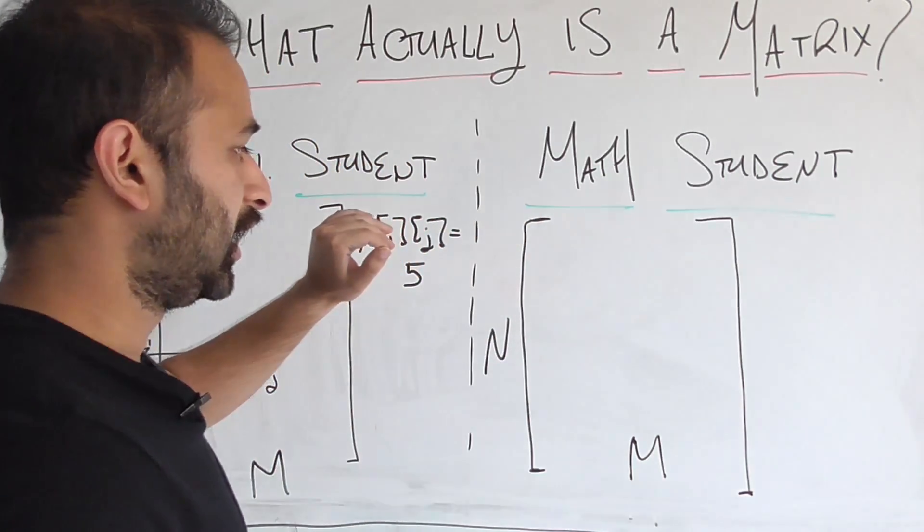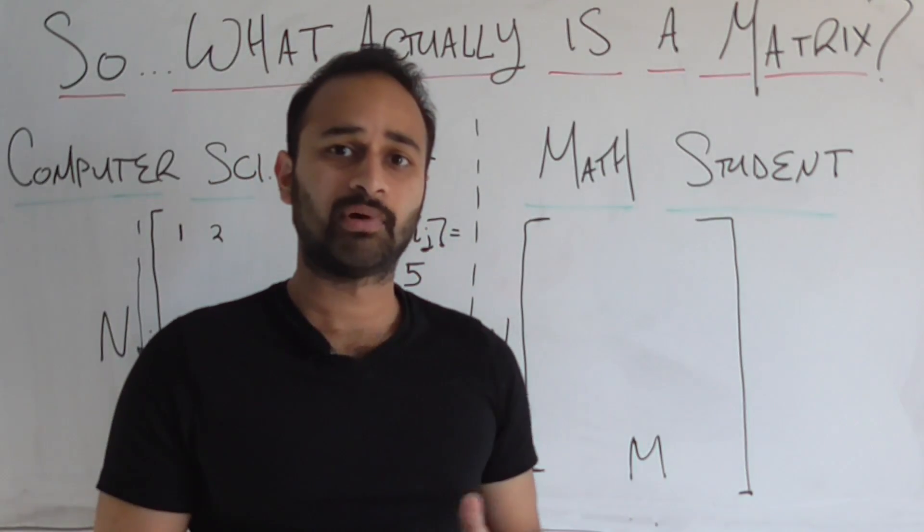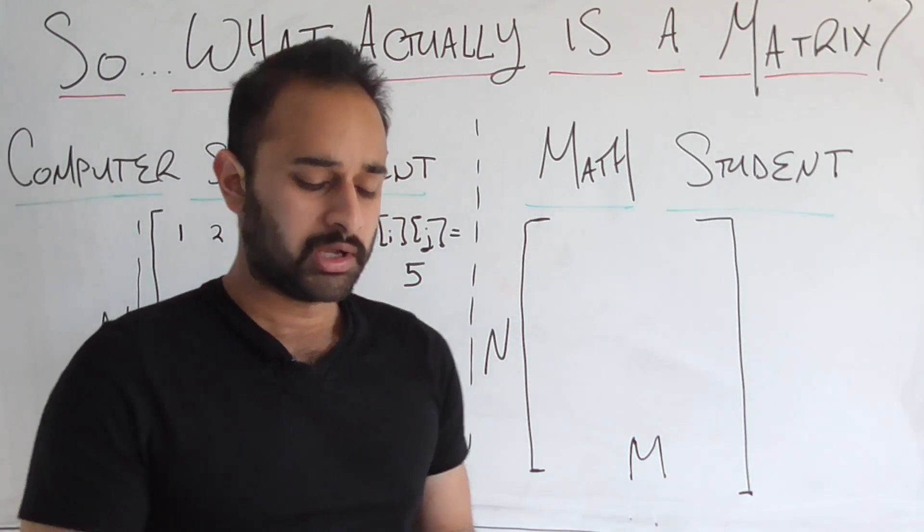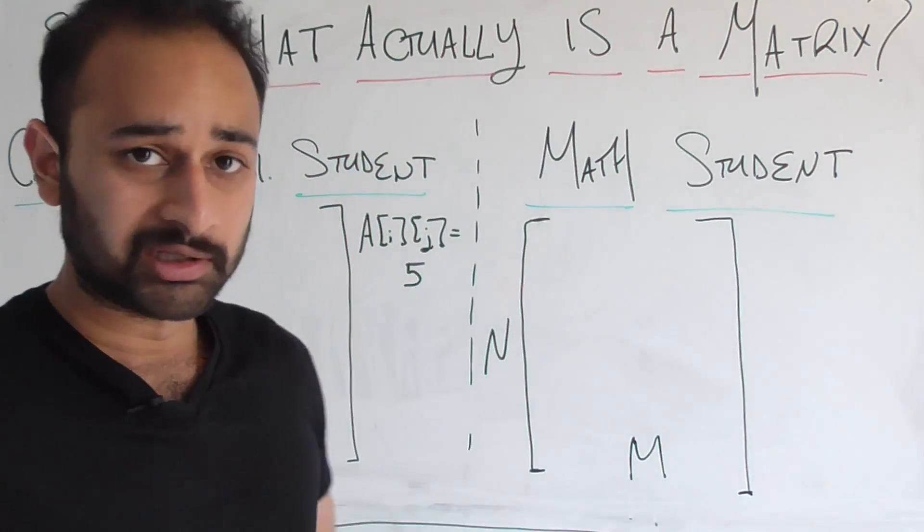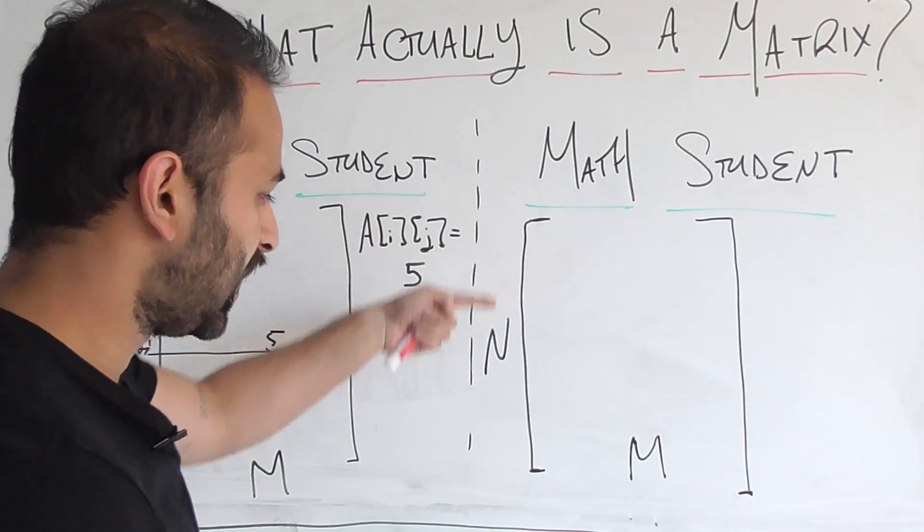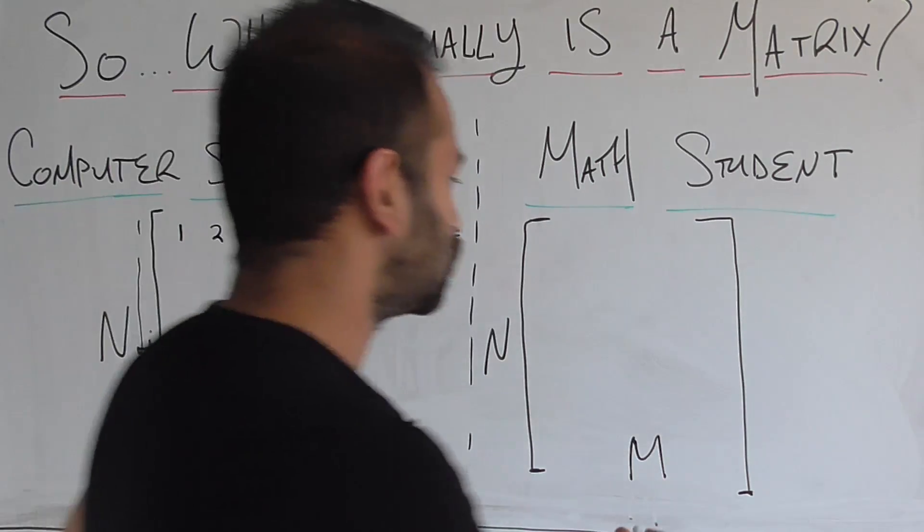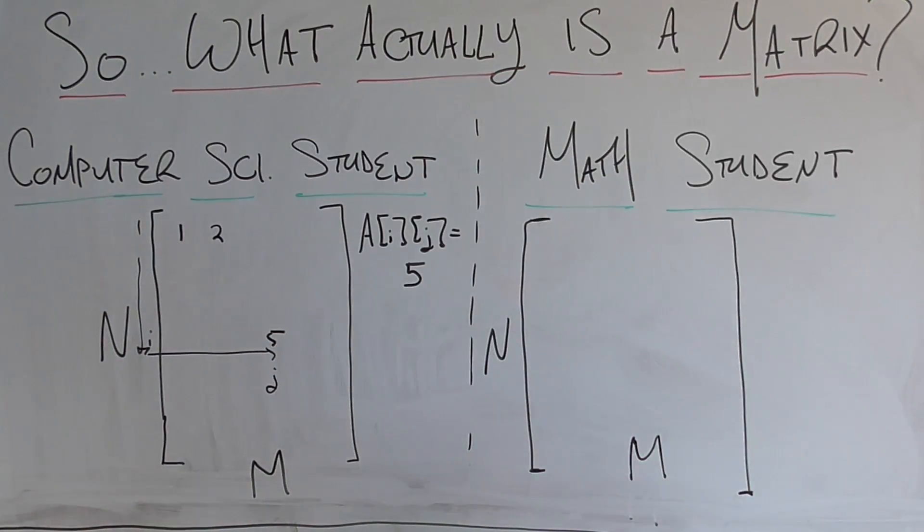So from a math student's perspective, a matrix is a type of linear transformation. So let me try to elaborate on that a little bit. So this matrix is an n by m matrix. So this n by m matrix, its job, basically, is to take a vector that lives in R^m.